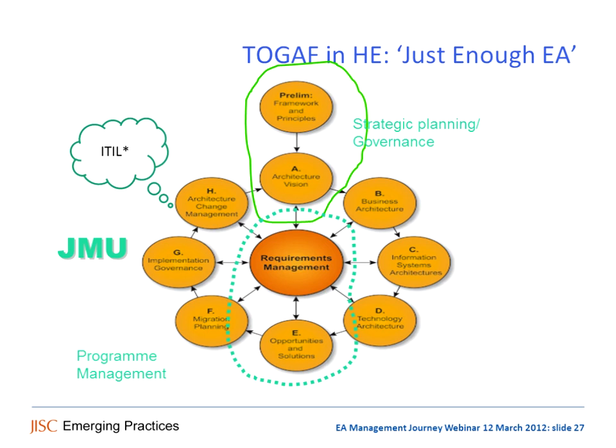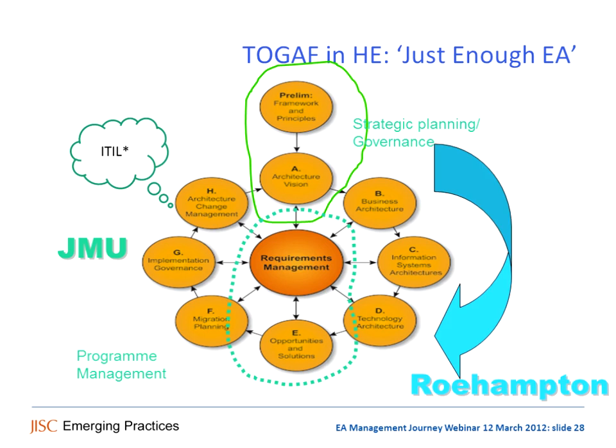Roehampton, on the other hand, found TOGAF most useful in the early stages of the process — getting this stuff right, getting the stack from the original vision through the development of the business architecture, the process architecture, and the way it related to systems and services and the underlying technology.